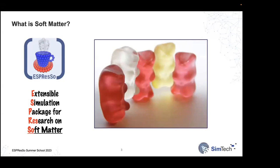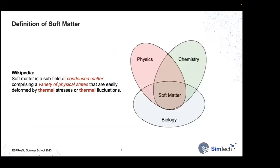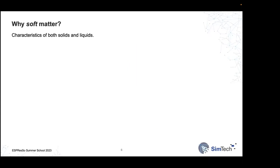What is soft matter? The standard answer I tend to give is: it's everything that is not hard. Soft matter is something deformable, not very stiff. More formally, it's a subfield of condensed matter with a great variety of physical states, where the key characteristic is that everything is related to thermal energy. Soft matter bridges very different communities — physics, chemistry, biology, and materials science.